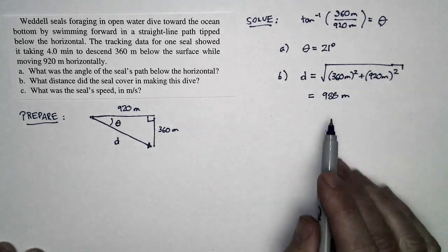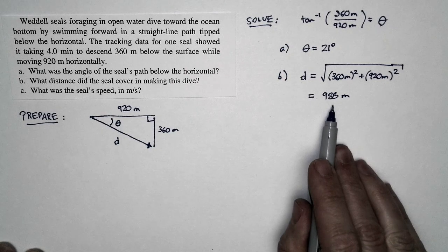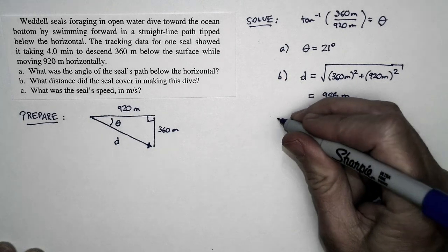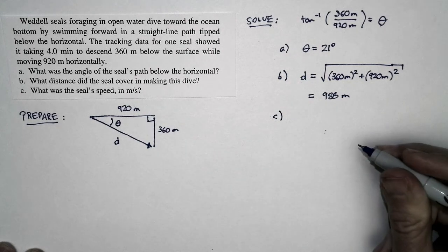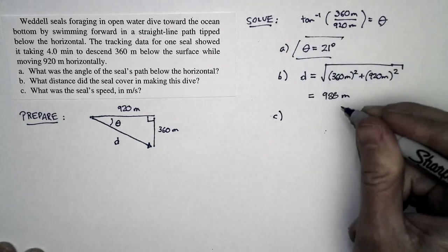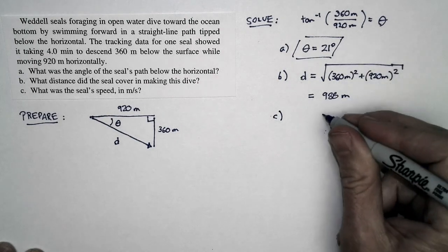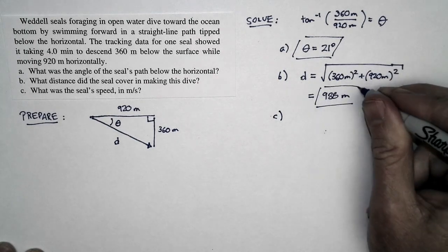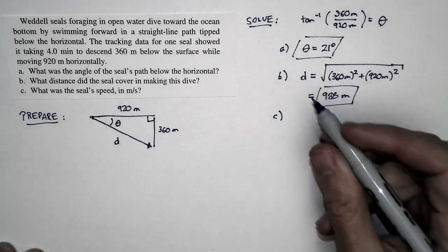By the way, I've kept an extra significant figure here because this is an intermediate stage in the calculation, because in the next step we're asked to find the speed. So 21 degrees travels a distance of 988 meters. That's our part A, part B. Part C is the speed.